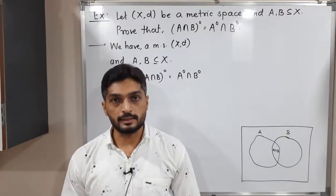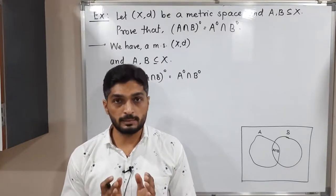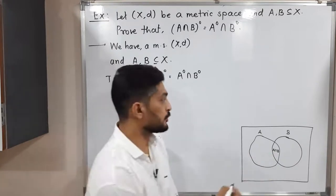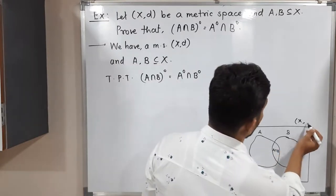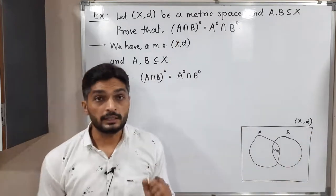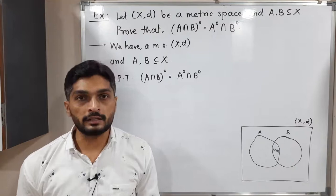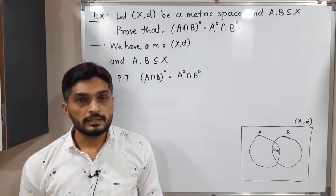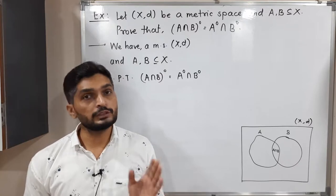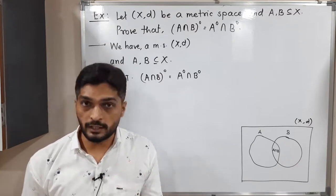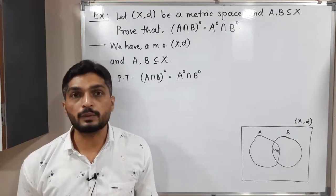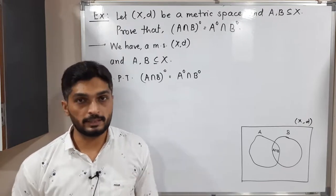Hi everyone, let us discuss this result. In this result we have a metric space XD and we have two sets A and B which are subsets of metric space XD. We have to prove that the interior of A intersection B is equal to the interior of A intersection the interior of B. To prove two sets are equal, we first prove the first set is a subset of the second, and then the second is a subset of the first.